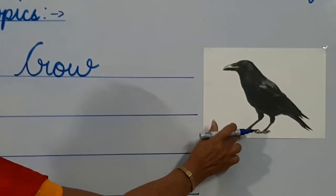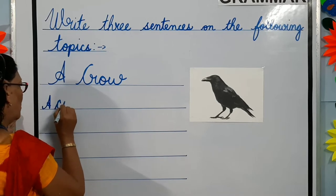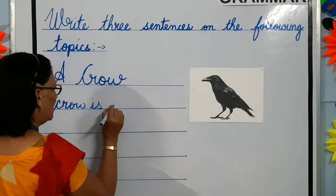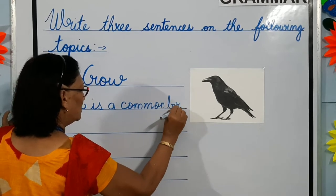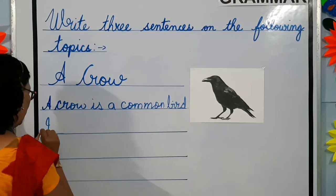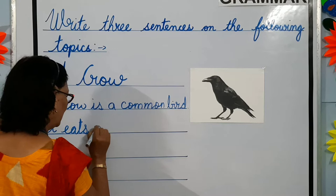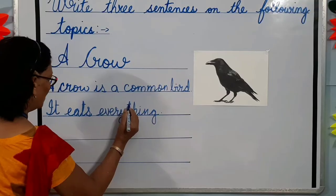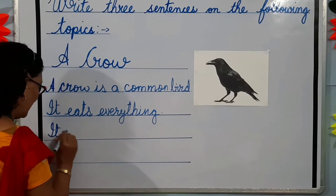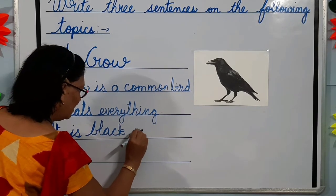Can you all recognize this bird? Yes, it is a crow. Now we will write three sentences about a crow. A crow is a common bird. It eats everything. It is black in color.